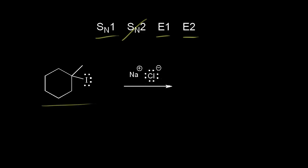Next, we look at the reagent. Here we have sodium chloride, and the chloride ion is a very weak base — it will function only as a nucleophile. So if we have a nucleophile, we go with a substitution reaction. Therefore, an SN1 reaction must be the case for this example.